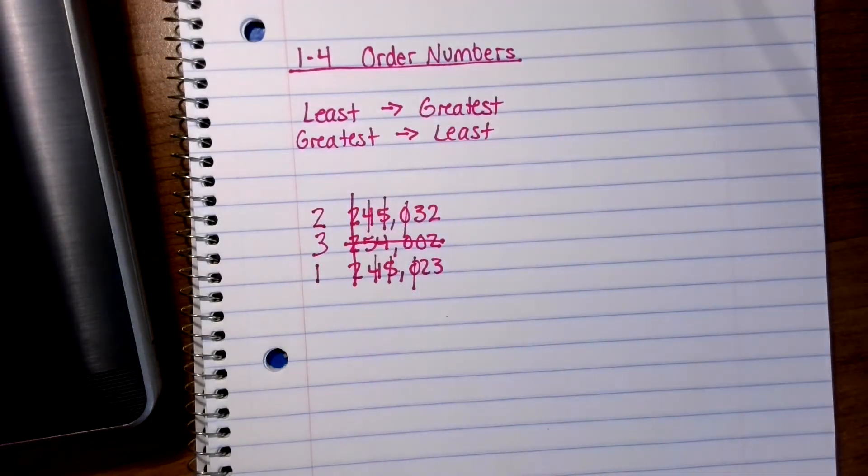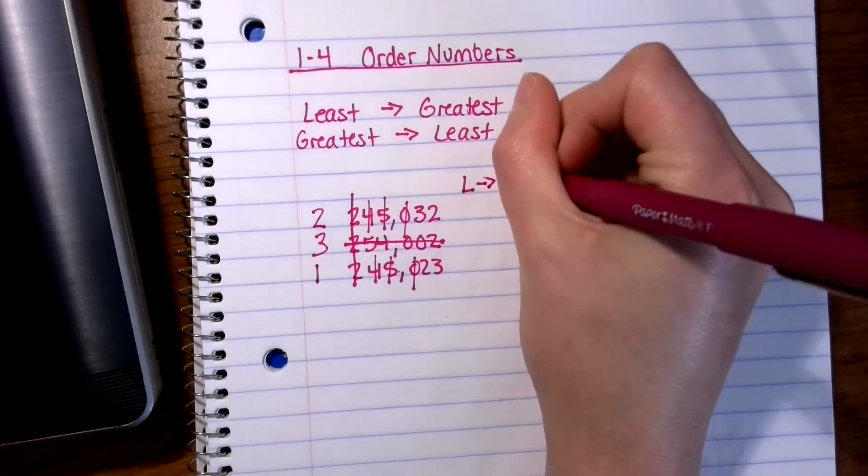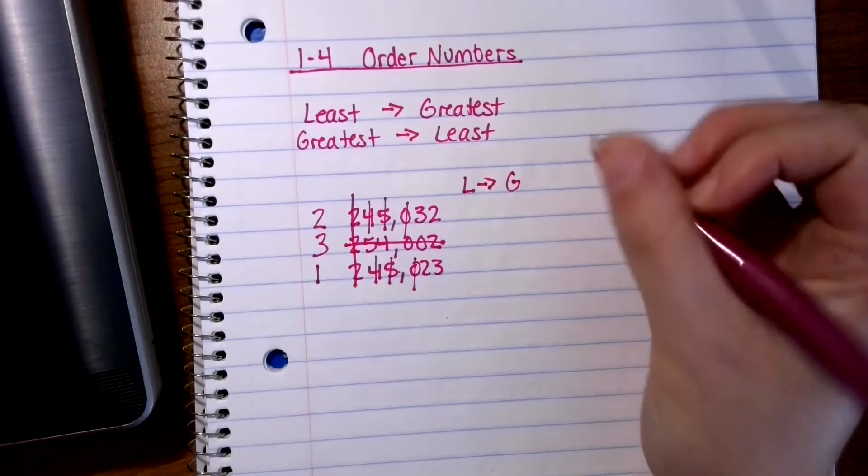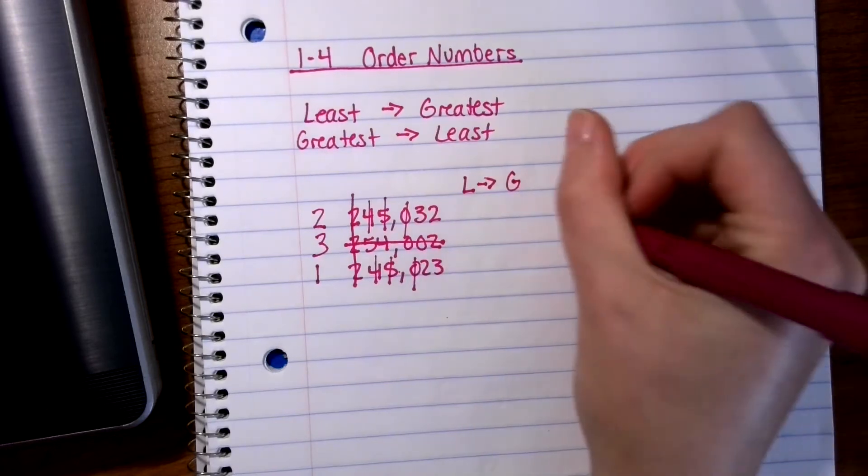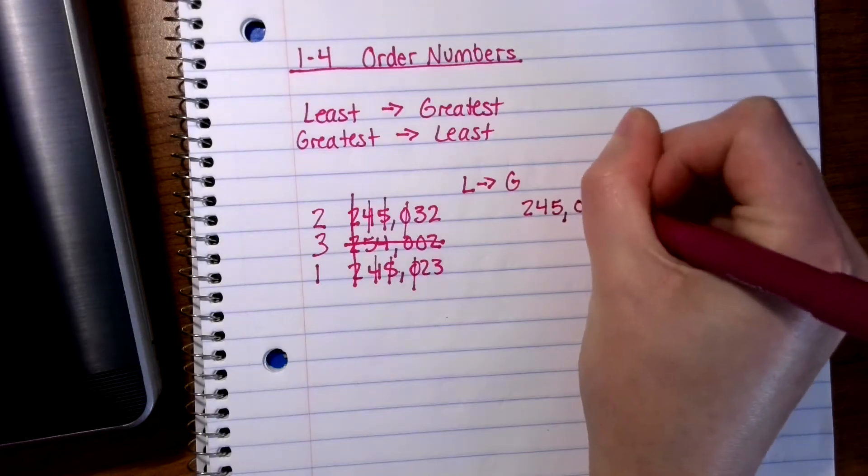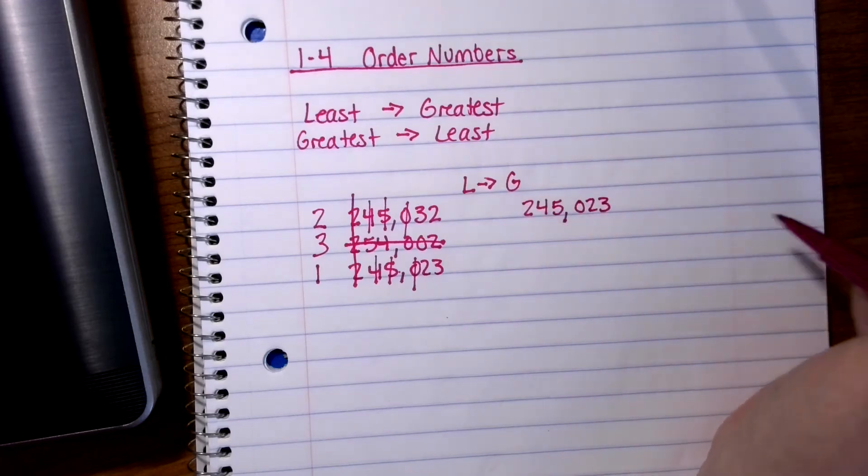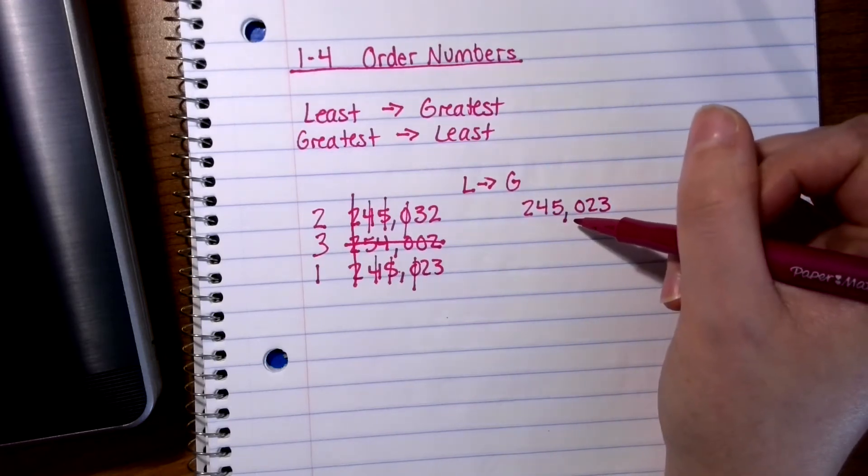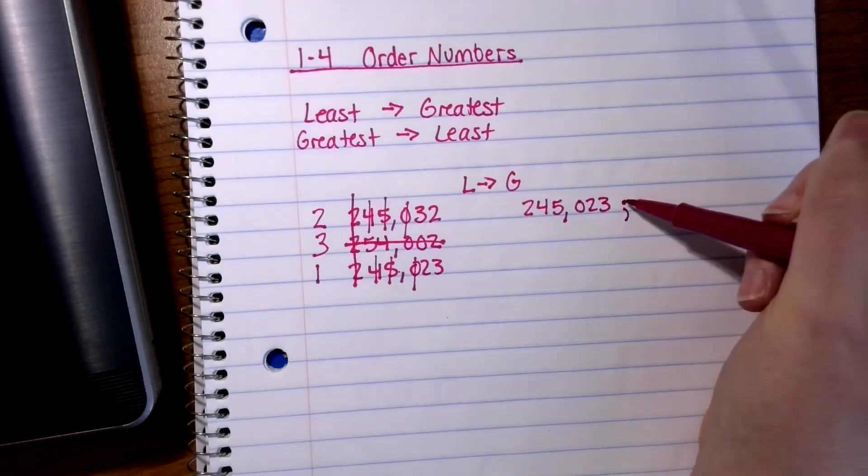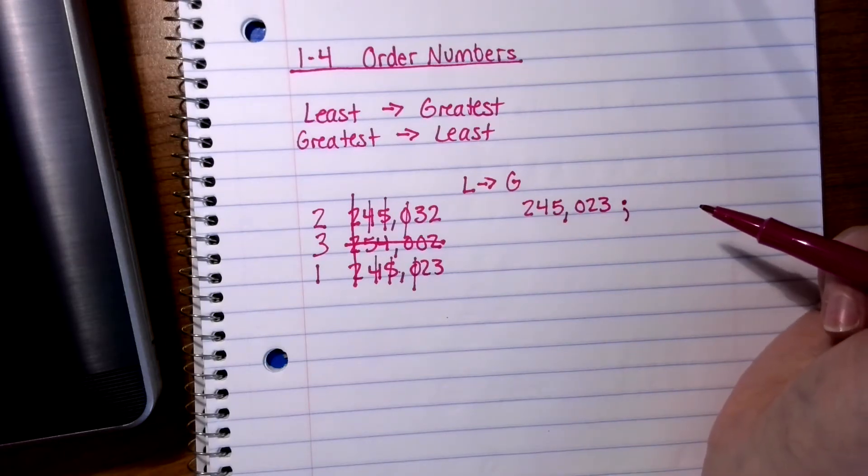So now to write these in order, let's say that this problem is least to greatest. Okay? And I'm shortening those by saying L to G. From least to greatest, I would write this number first because that's my smallest. I would write 245,023. And then to separate numbers, if we're writing them in a list, we can't just keep using commas because we have commas in our numbers. So we use what's called a semicolon where I put kind of like a period in the middle of the line and then a comma right underneath it. That is called a semicolon.